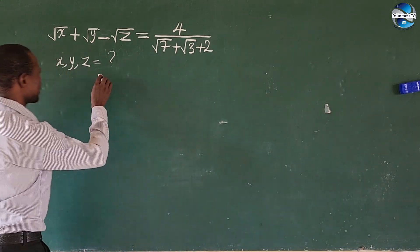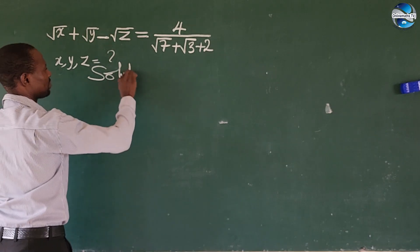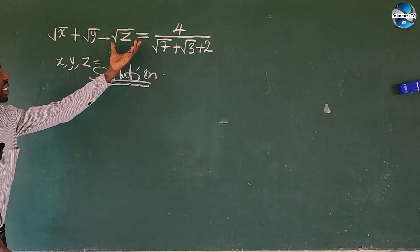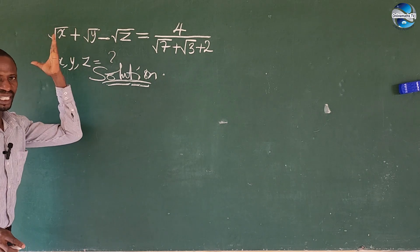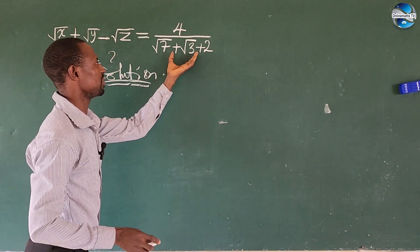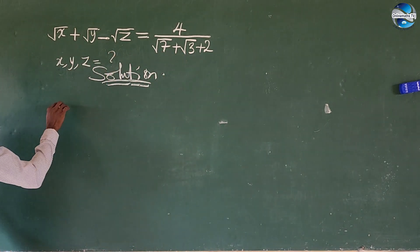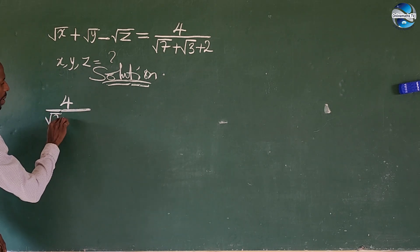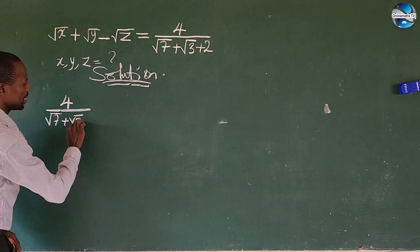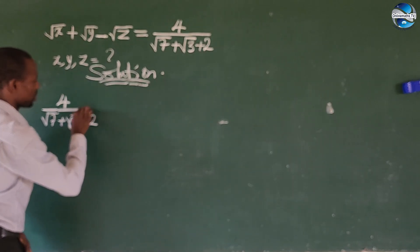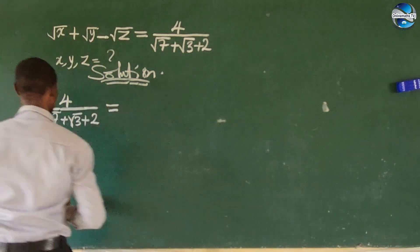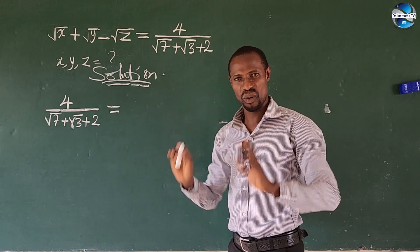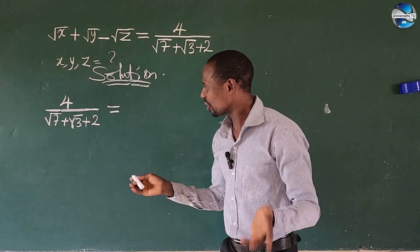We take our expression. This side of the expression doesn't have an issue. We are going to deal with the right-hand side, which is 4 all over root 7 plus root 3 plus 2. If you look at this expression here, this is a surd — a wonderful surd. How do we solve this?